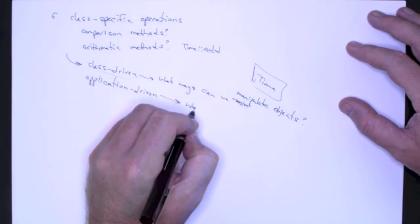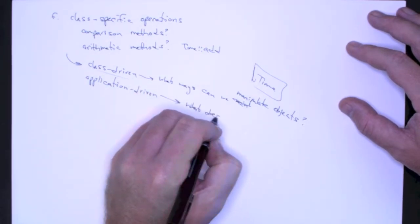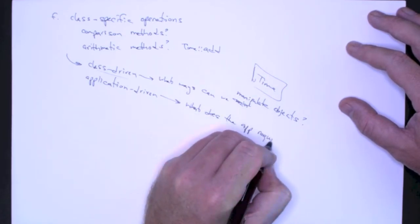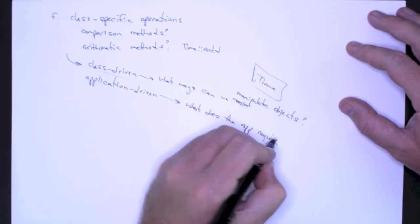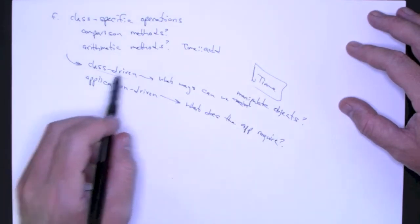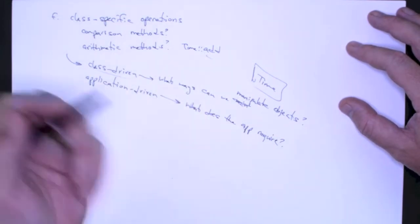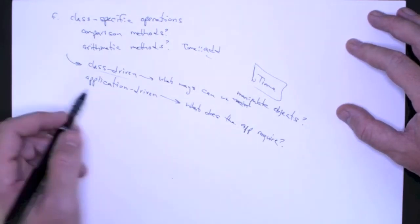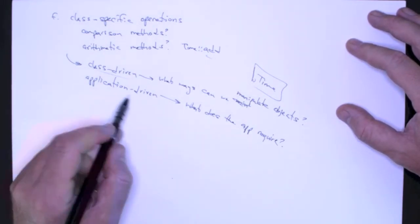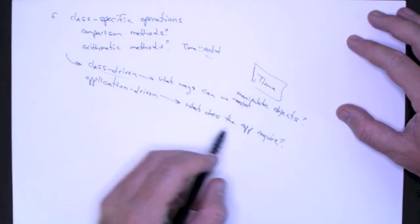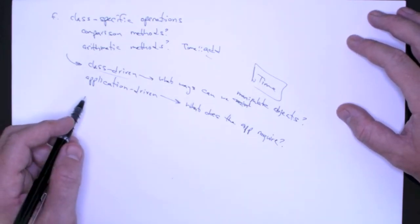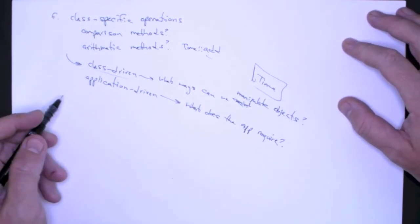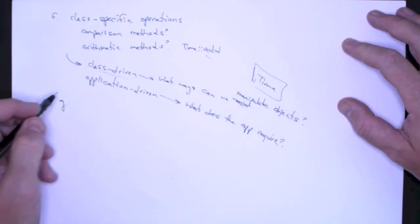What does the application require? What does the app require? Maybe you don't need, for a given application, maybe you don't need to add time objects. You only need to compare them. So in that case, you simply define the methods that you need based on what the application requires. And usually that's specified in some sort of requirements document.